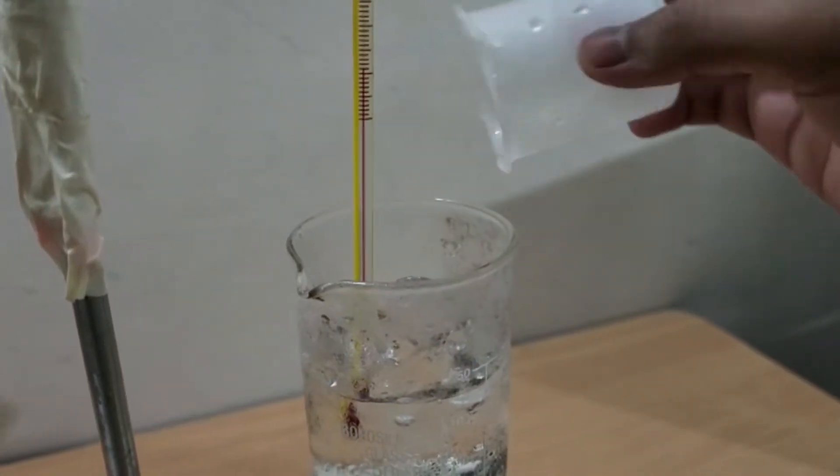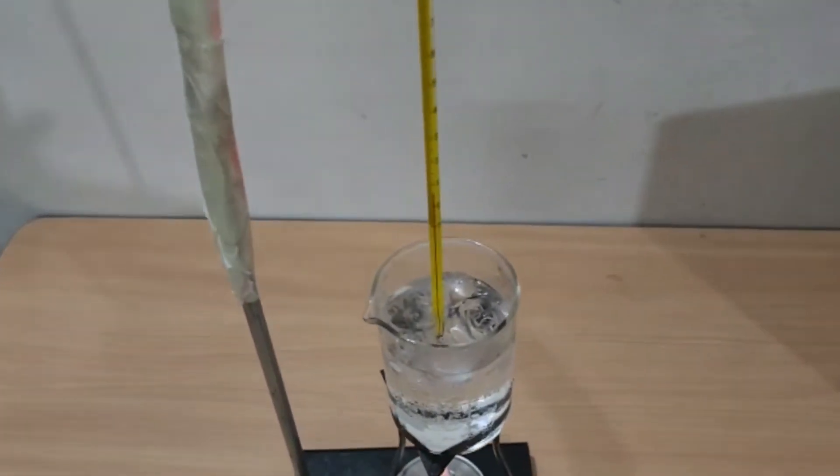Take some crushed ice in a beaker and suspend a thermometer in it. The temperature of the ice is found to be zero.